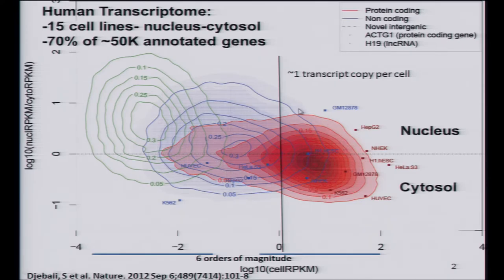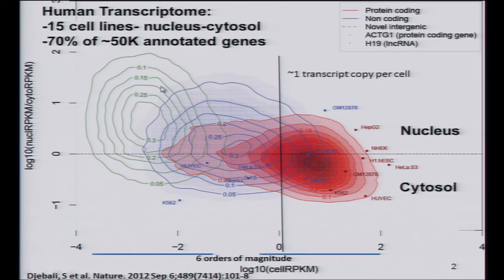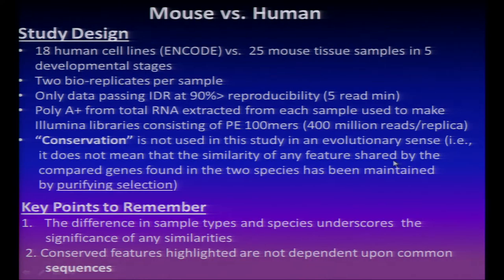Each point within these clouds is a given gene in each of the 15 different cell lines. There is a natural and very clear centroid for protein-coding genes, which is more localized in the cytosol. The annotated non-coding genes have a centroid that moves more towards the nucleus and is shifted to lower expression levels. The novel transcripts are even more nuclear-oriented and have much lower expression than the centroid seen for the protein-coding regions.